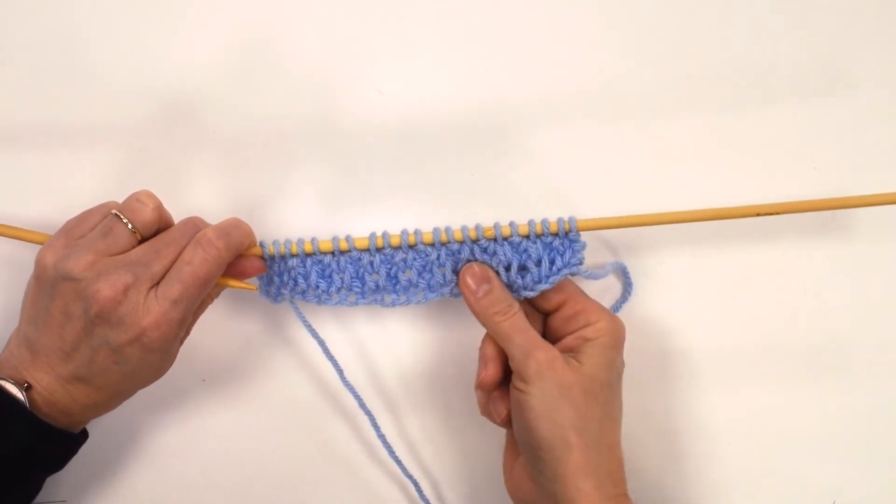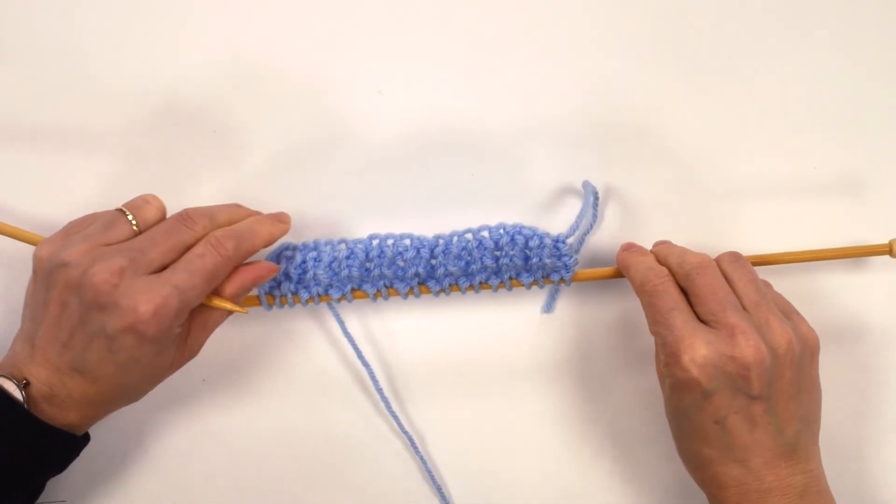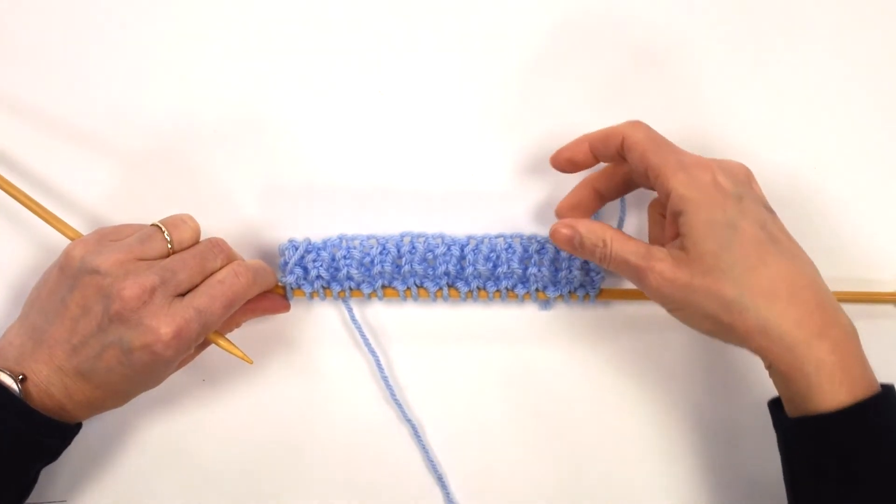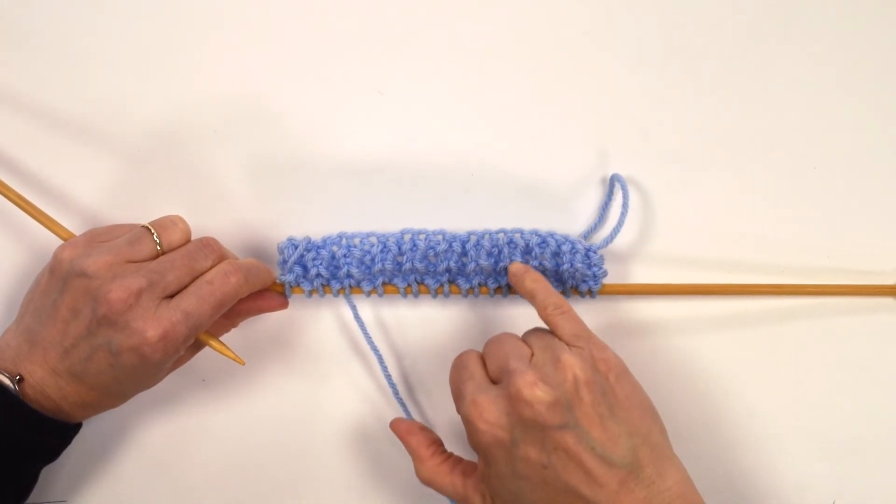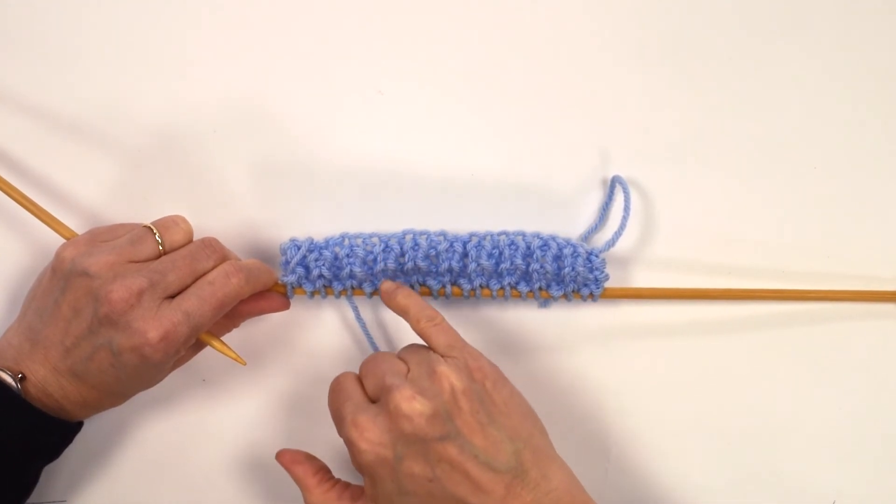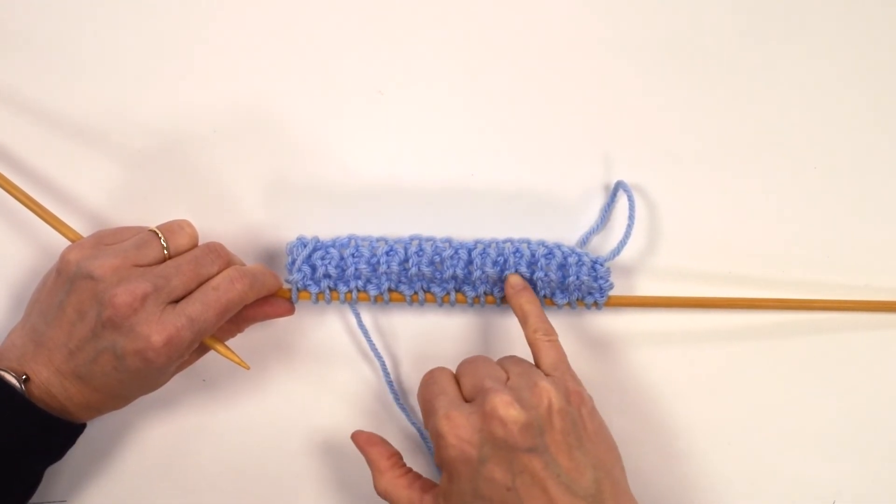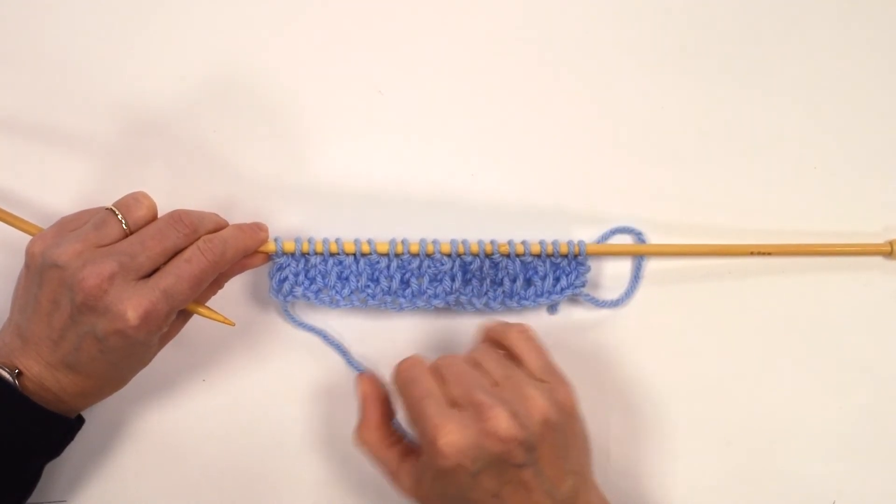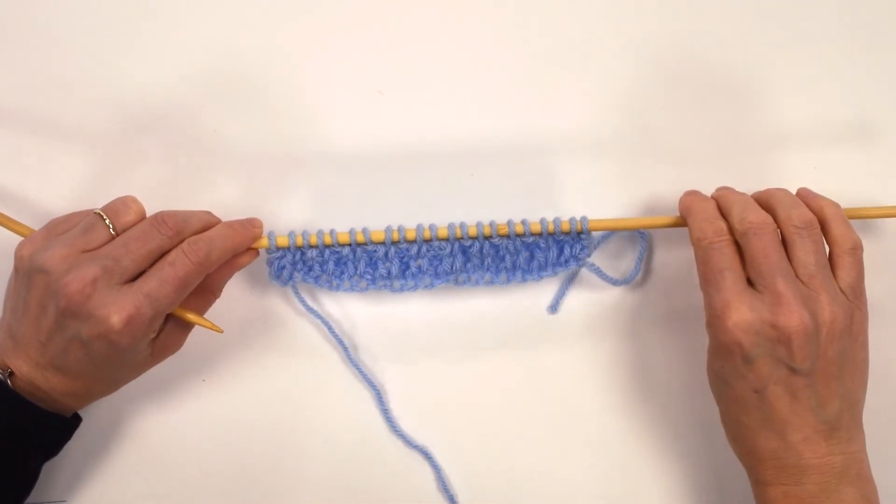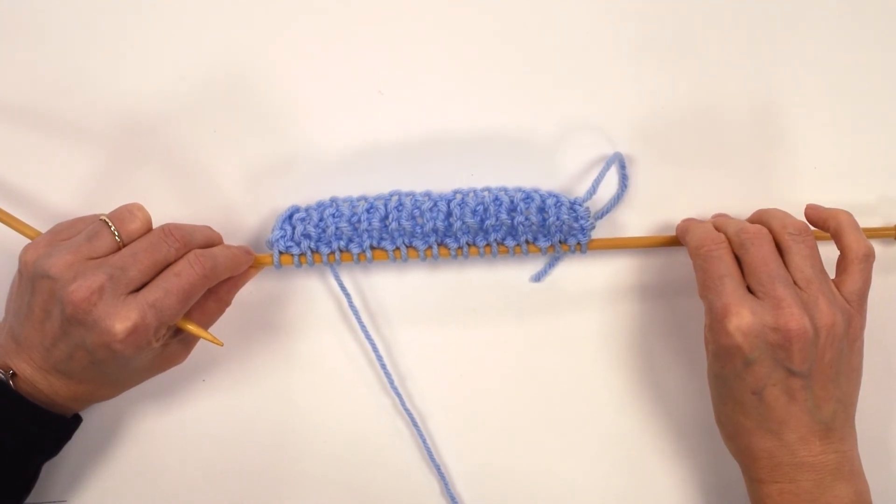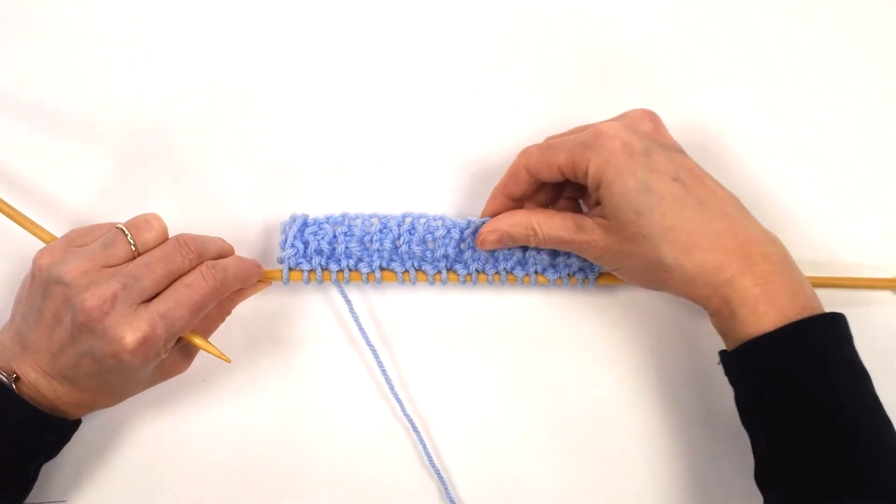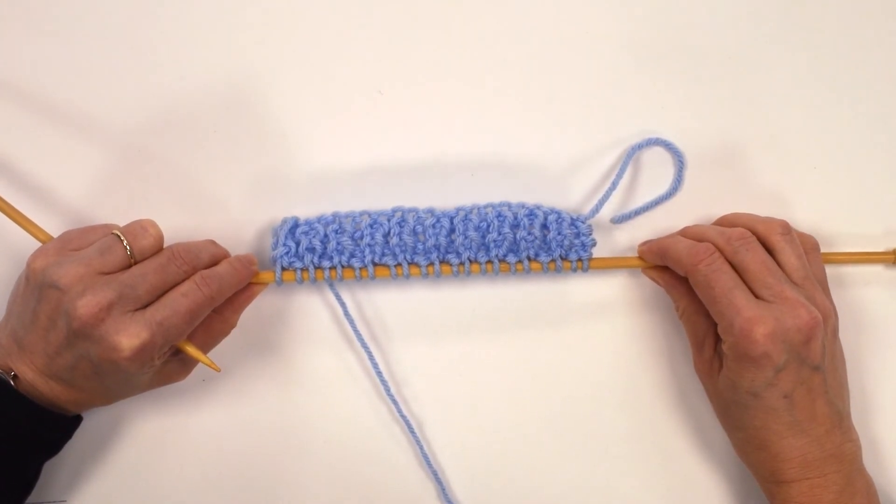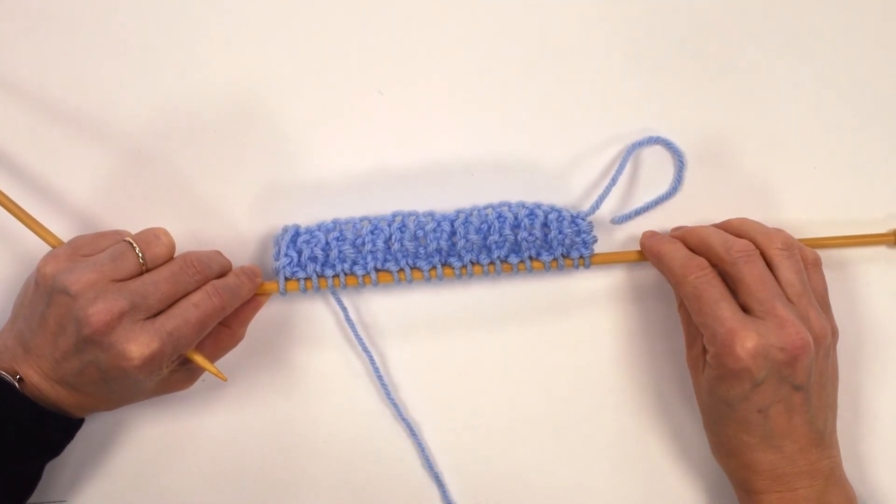So you can see here how you're getting two slightly different sides. There is a definite difference to the sides. So these, you're getting every other stitch that's looking quite a lot fatter at that point. And it's almost, even though it's still ribbing, it's smoother on the other side. So that is the half fisherman's rib where you do a knit row and then you do a row of K1B, purl one, across.